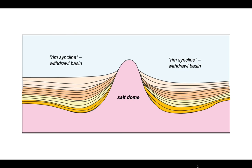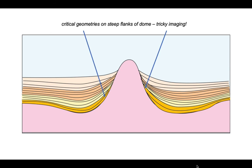The margins around the salt dome are generally referred to as rim synclines or withdrawal basins or mini basins. And the critical geometries for understanding these processes lie on the flanks of the salt dome itself.